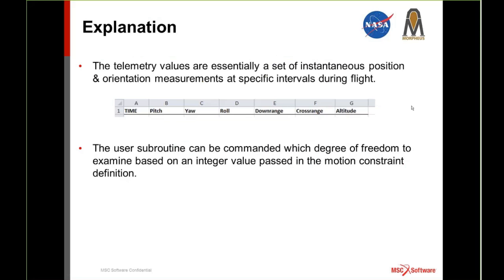I'll explain what that telemetry data consists of and how you get it to show up in the ADAMS analysis. Our telemetry data is basically just time and six-degrees-of-freedom positions — we don't have any velocity or acceleration values in the raw telemetry data, which will require a little bit of post-processing. The important thing to note is that the subroutine can work one degree of freedom at a time because the MOTSUB subroutine gets passed an integer value from the ADAMS solver asking which degree of freedom it's looking for.